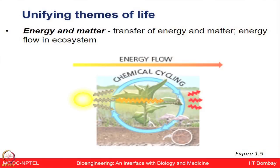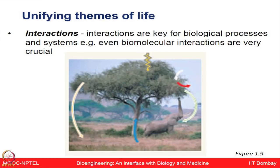The transfer of energy and matter is very crucial. How energy flows in the ecosystem is governed by the intricate relations of various processes involved in chemical cycling. Interactions are key for biological processes and life forms — both at the environmental level between organisms, and at the biomolecular level where various biomolecules interact to govern life forms.